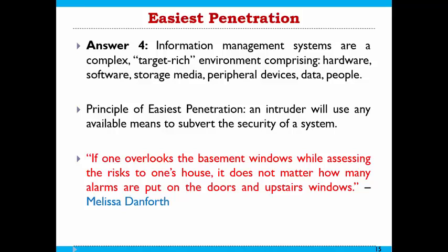This relates to the principle of easiest penetration. Consider an example: you build a house with guard rails and barbed wire on the ground and upper floors, but the basement windows or doors are not properly locked. A thief will not try to enter through the heavily secured areas — they will go to the basement. The hacker or eavesdropper will not attack where your system is strong; rather, they will find the loophole or vulnerability through which they can easily access your system.